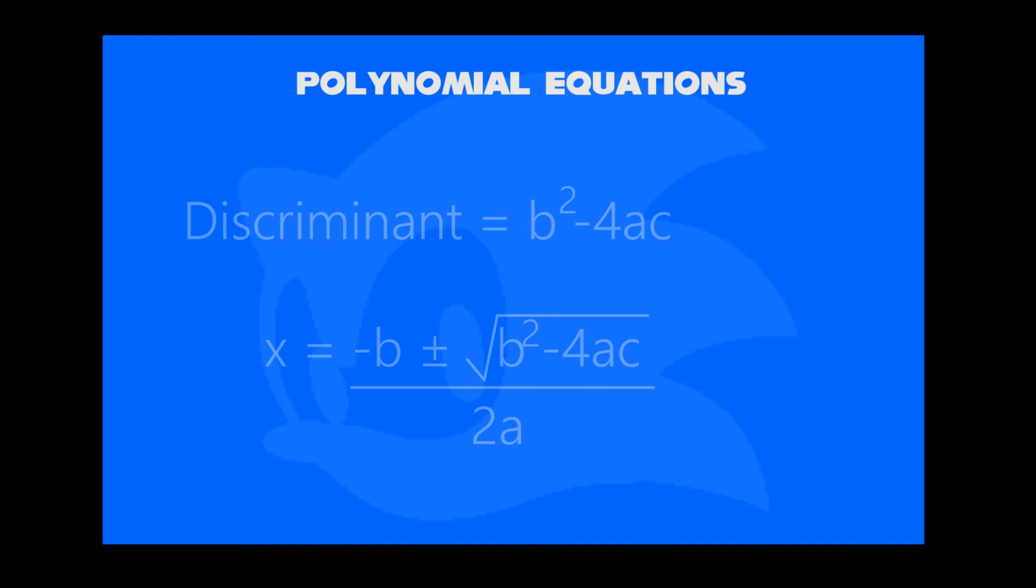We therefore write discriminant in square root. x equals minus b plus or minus square root of discriminant. We write b squared minus 4ac divided by 2a. This will find two variables, one on plus and minus on the other.